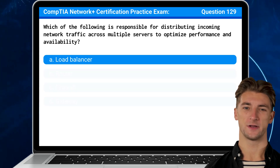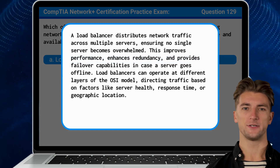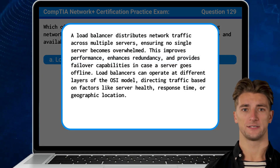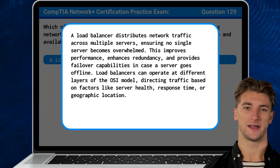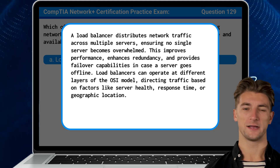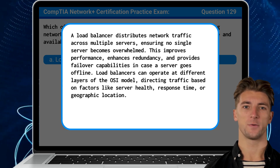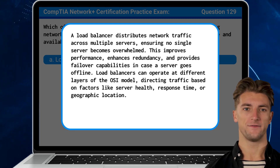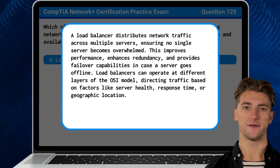The answer is A — Load balancer. A load balancer distributes network traffic across multiple servers, ensuring no single server becomes overwhelmed. This improves performance, enhances redundancy, and provides failover capabilities in case a server goes offline. Load balancers can operate at different layers of the OSI model, directing traffic based on factors like server health, response time, or geographic location.